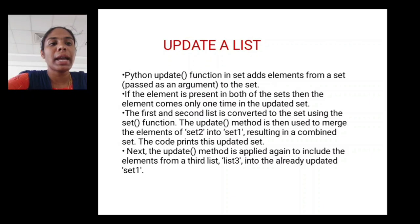Update a list. Python update function in sets adds elements from a set passed as an argument to the set. If the element is present in both of the sets, then the element comes only one time in the updated set. The first and second list is converted to the set using the set function. The update method is then used to merge the elements of set 2 into set 1, resulting in a combined set. Next, the update method is applied again to include the elements from the third list into the already updated set 1.